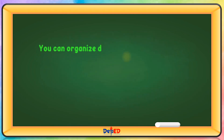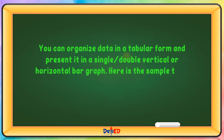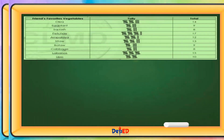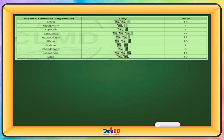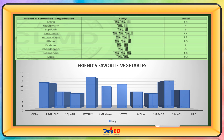You can organize data in a tabular form and present it in a single or double vertical or horizontal bar graph. Here is the example table on your friends' favorite vegetables. How can this be presented in a graph? This is how we show it in a vertical graph.